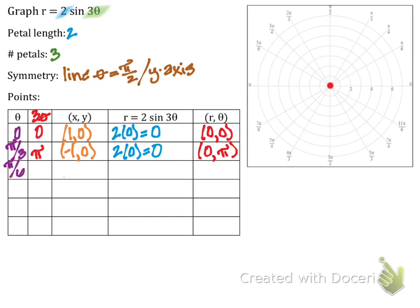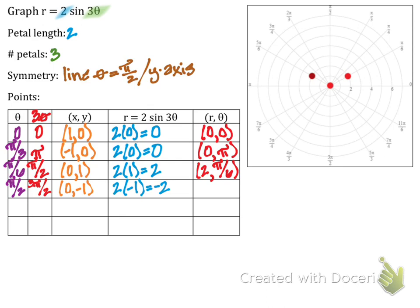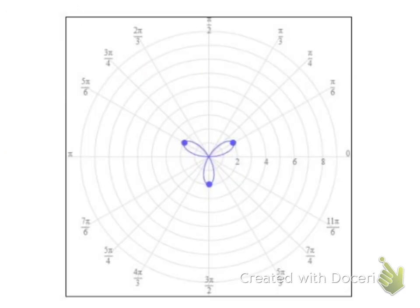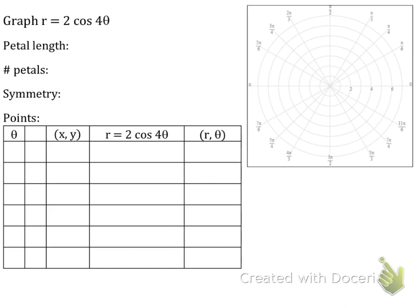Trying theta equals pi over six gives three-theta equals pi over two. Plugging in, I get the ordered pair (2, pi/6). We have y-axis symmetry, so I can plot that mirror point — that's two petals. For the third, try theta equals pi over two, giving three-theta equals three pi over two. Plugging in gives (−2, pi/2). As you plot your points, the tool starts putting the petals in, and we end up with the full three-petal rose.